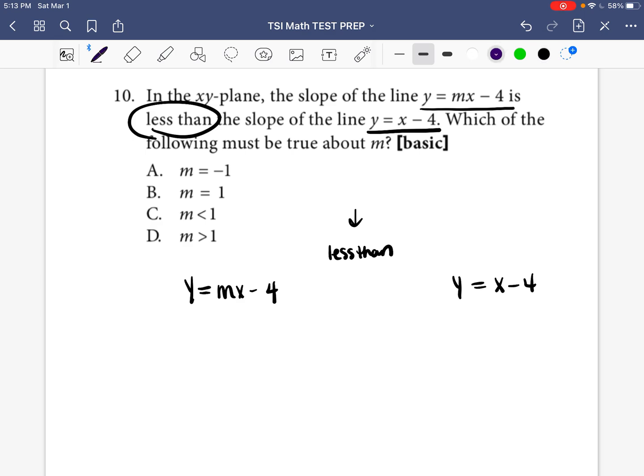So now, all we have to do is figure out what is the slope of this line. And what is the slope of this line? Well, in any equation that's written Y equals MX plus B, the slope is whatever number or letter comes before the X. So in this first equation, the number or letter that comes before the X is M. So the slope in this case is just M.